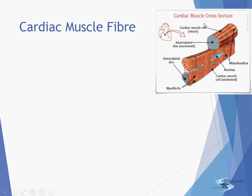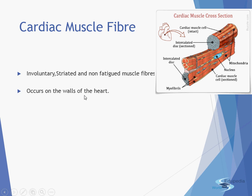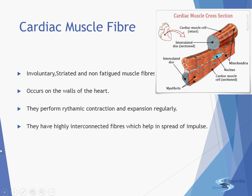Next come the cardiac muscles. The word 'cardiac' relates to the heart, giving the hint that these muscles are located on the wall of the heart. They are also involuntary — heartbeat is not under our control — but in structure they are striated. They are non-fatigued muscle fibers that occur on the walls of the heart, performing rhythmic contraction and expansion regularly. They have interconnected fibers which help in the spread of impulse — whenever the heartbeat spreads, it passes as an impulse from one muscle to the other throughout the heart.